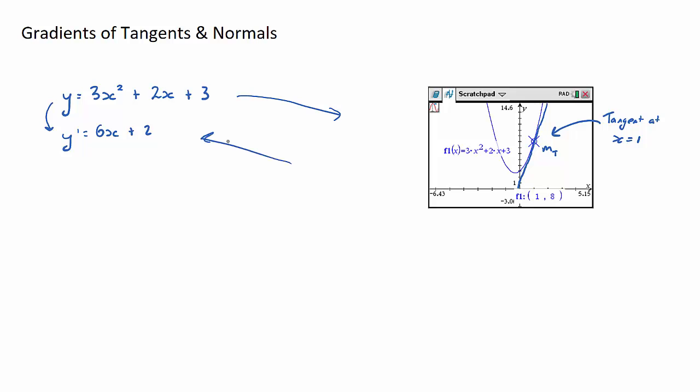This is where the derivative comes in. If I were to substitute in x equals 1 into my derivative, what do I get? Well, I get y dash equals 6 times 1 plus 2, and that is equal to 8. Now lo and behold, that is the gradient of this tangent.